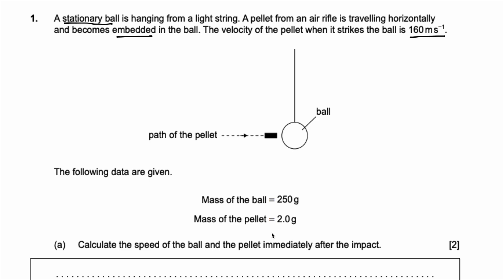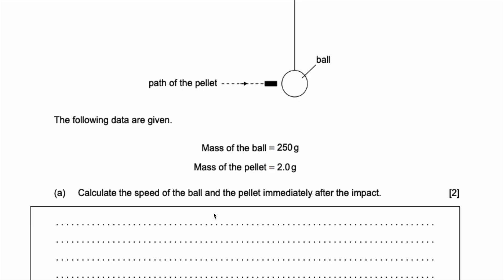Calculate the speed of the ball and the pellet immediately after the impact. Now to solve this problem you have to use the concept of the conservation of momentum. Essentially the momentum of a system before and after must be equal. This is always obeyed. So the momentum initial is equal to the momentum final.